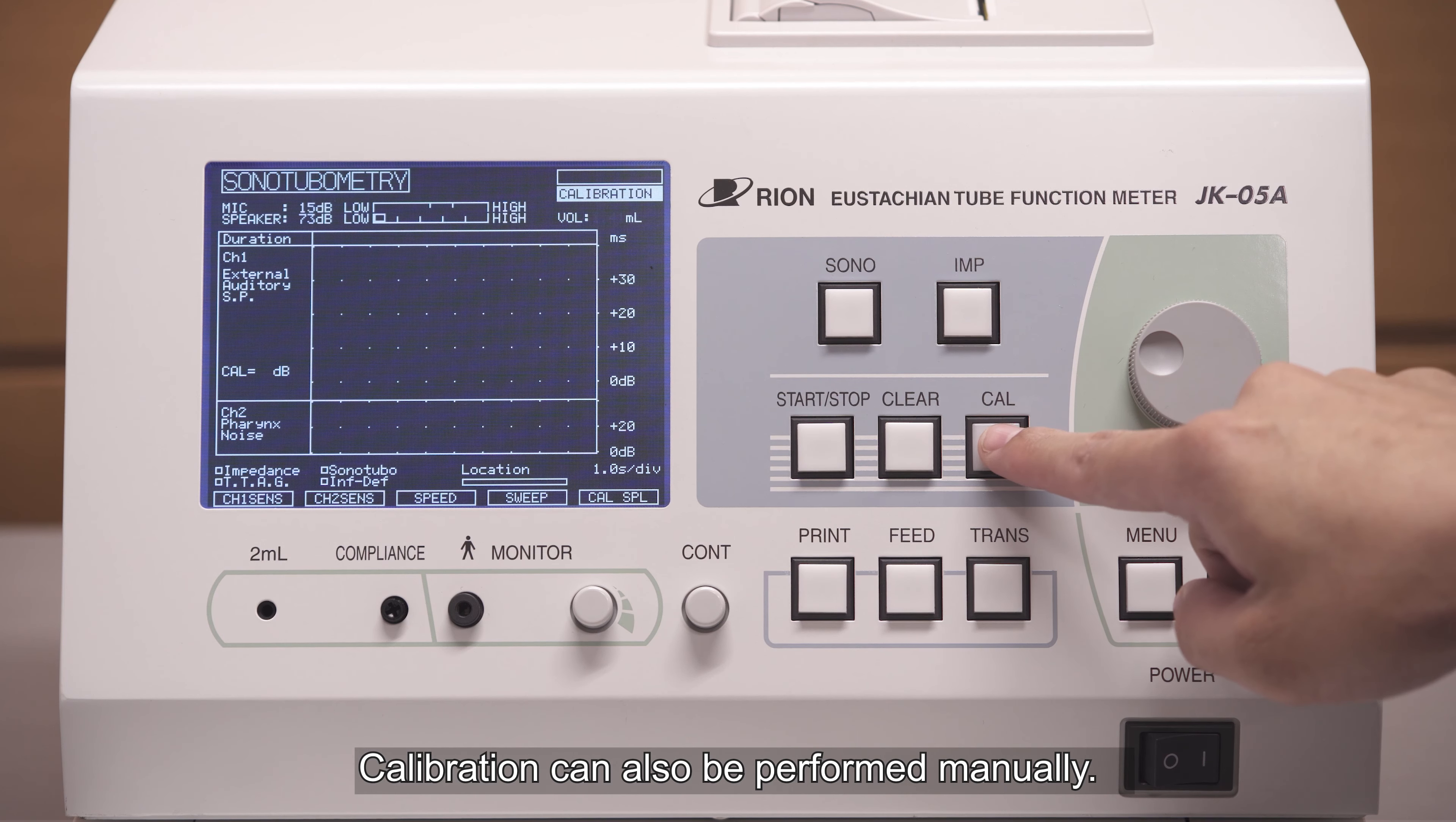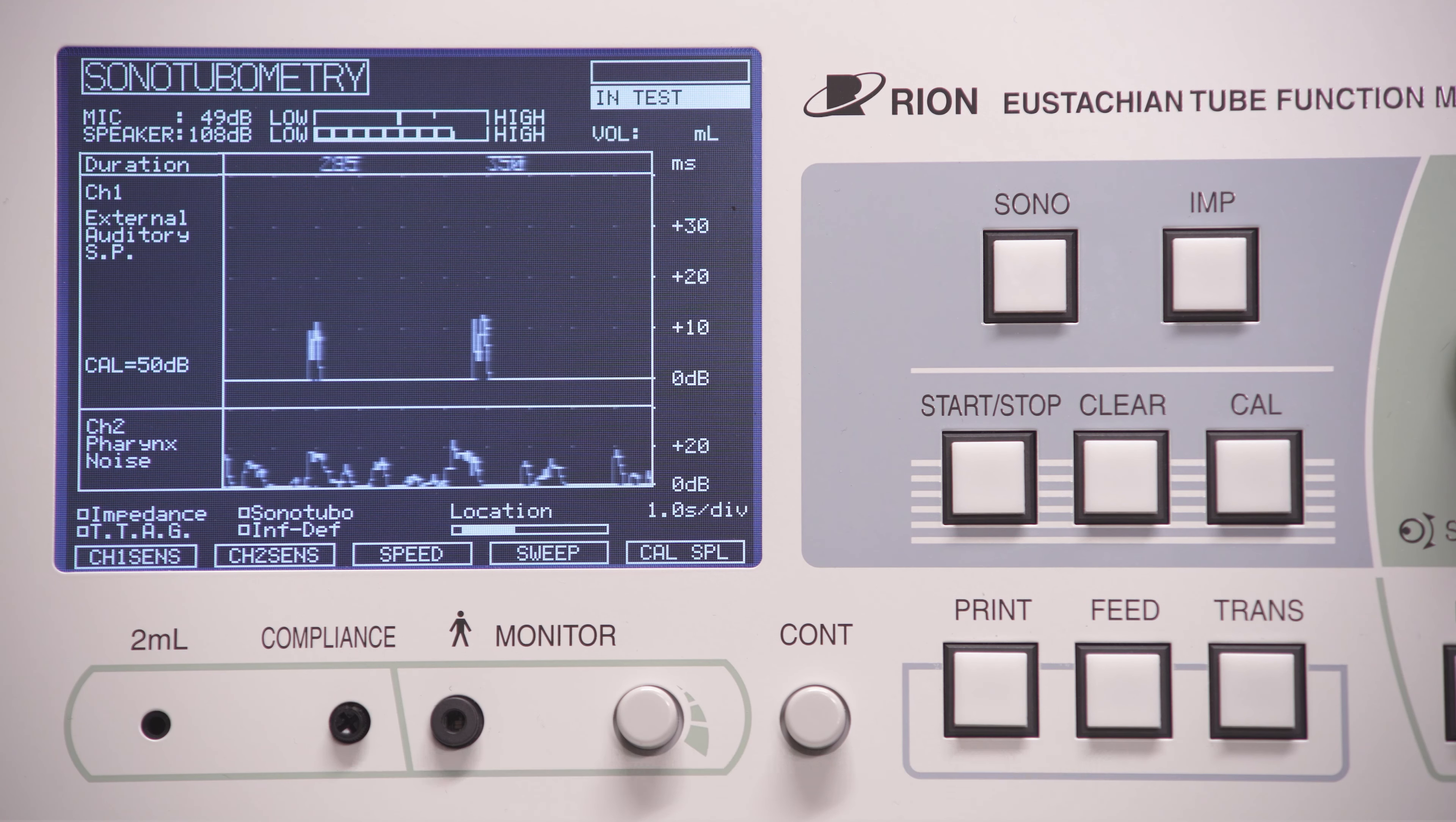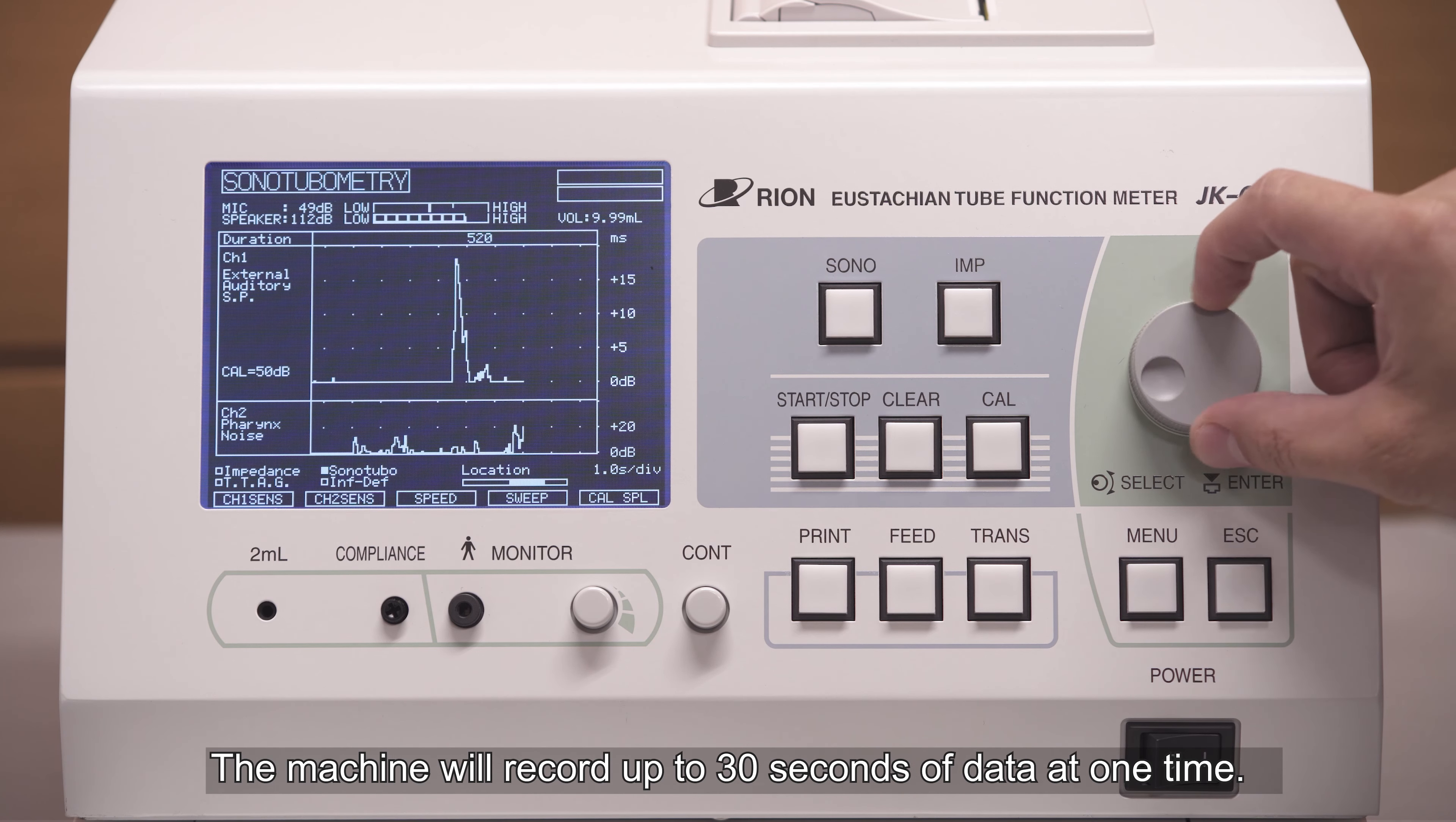Calibration can also be performed manually. The test screen will begin to scroll to the left. Instruct the patient to swallow. Press the start stop button to finish the test once the data you need has been recorded. The machine will record up to 30 seconds of data at one time.